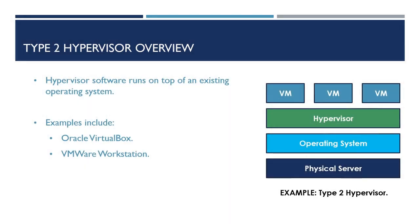Next up, type 2 hypervisors. These are slightly different to type 1 hypervisors in the sense that they run on top of an existing operating system. As you can see in the example on the screen, we have our operating system and then the hypervisor sitting on top. An example of this would be your PC at home — you could be running Windows 10 and then a hypervisor on top of that in order to create virtual machines. Some examples of type 2 hypervisors are Oracle VirtualBox and VMware Workstation.